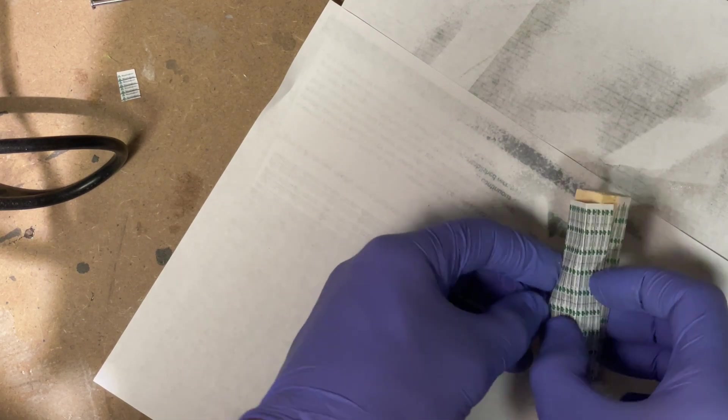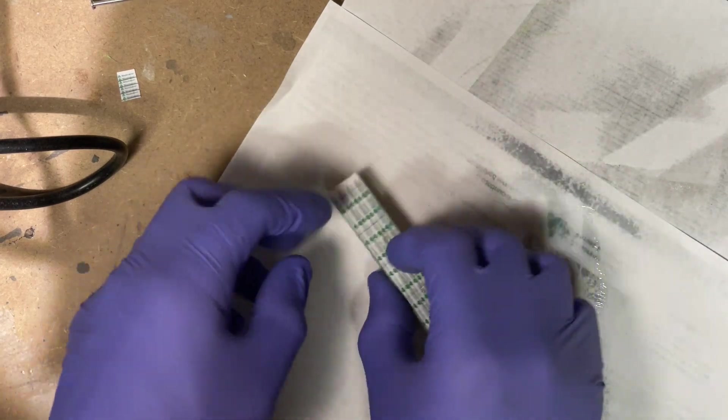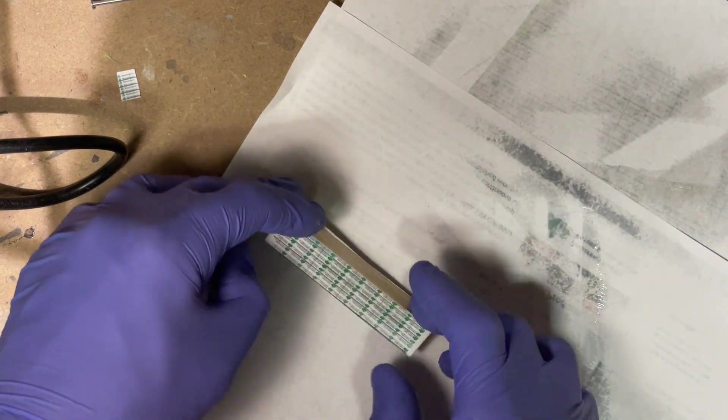Once I had both sides on, I pressed the wrapped load against my workbench a few times on all sides to make sure everything was really securely adhered, and it was ready to go.